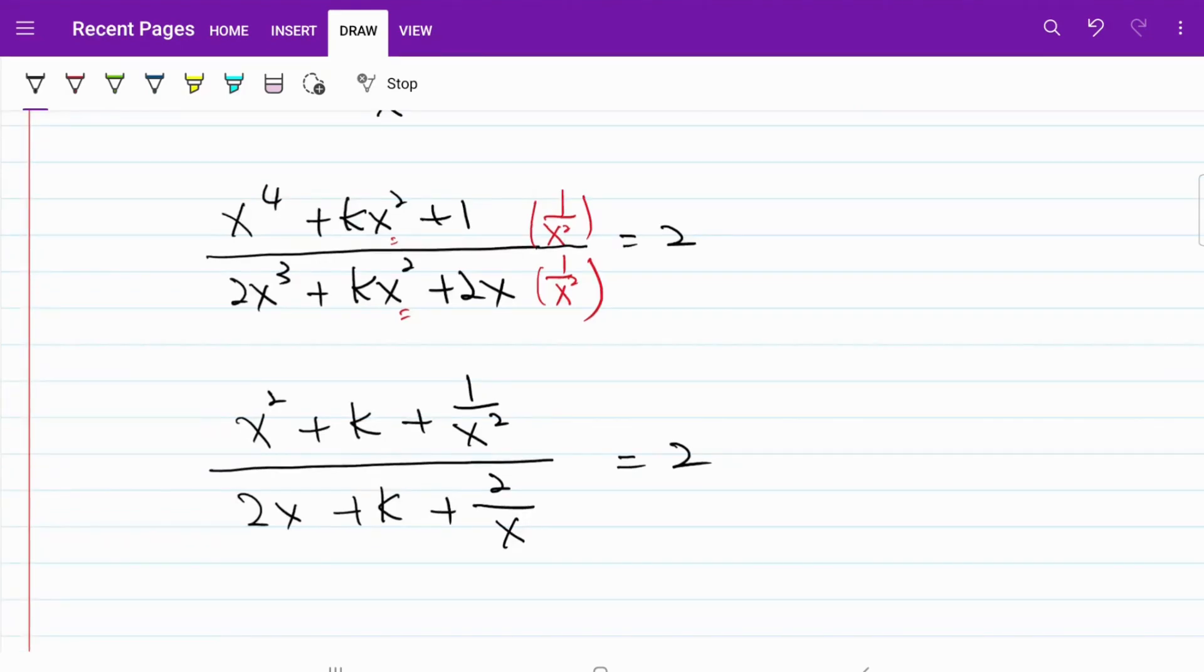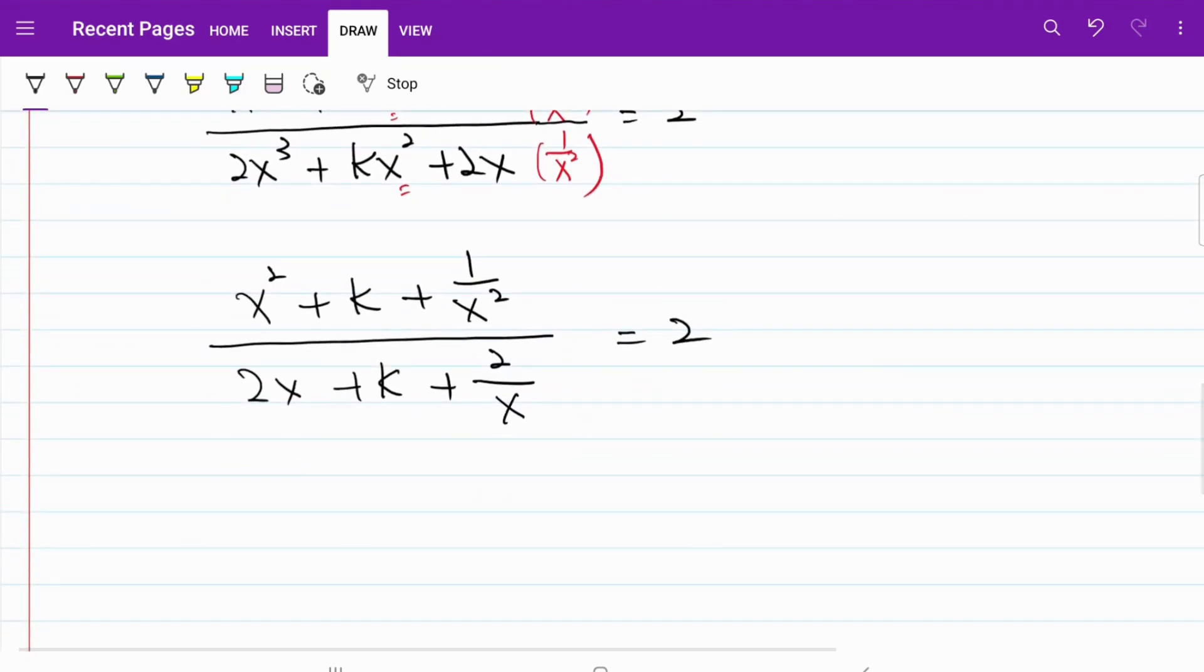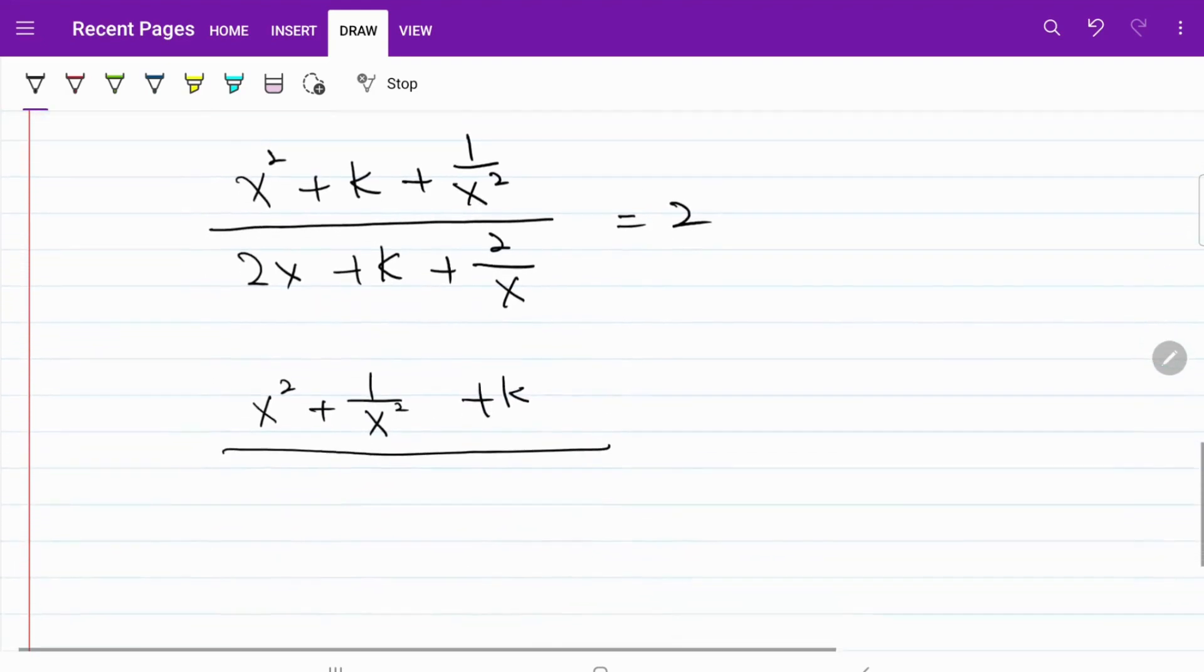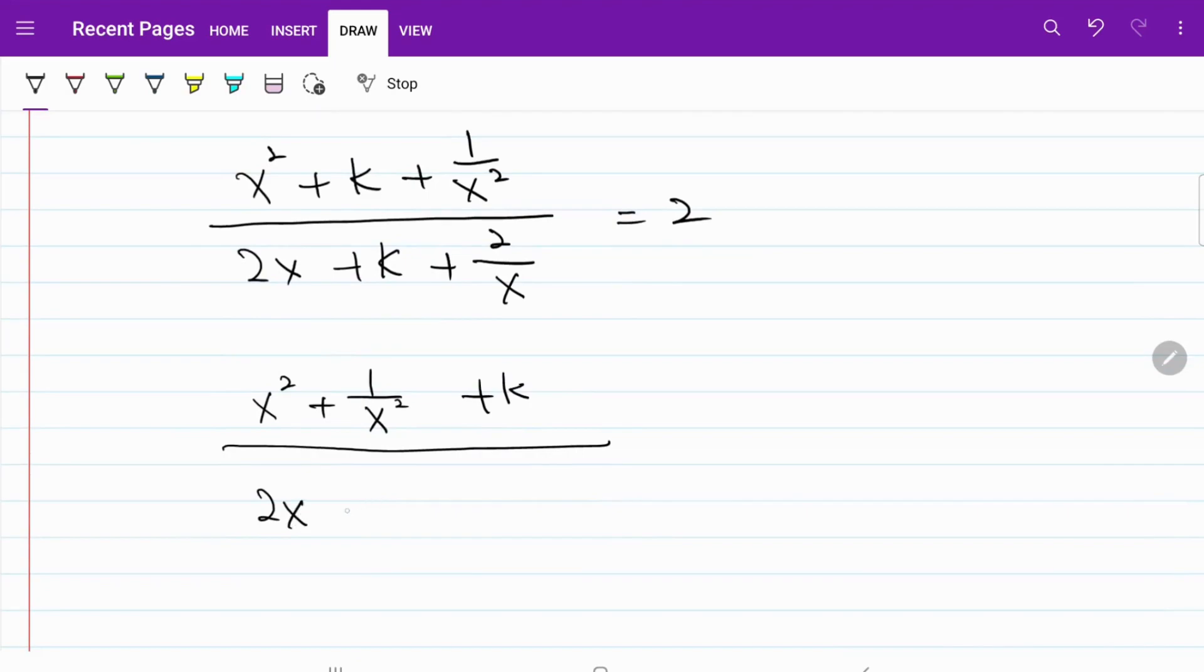Let's try to rearrange our equation. So what I have now is x squared plus 1 over x squared plus k, over 2x plus 2 over x plus k, equal to 2.